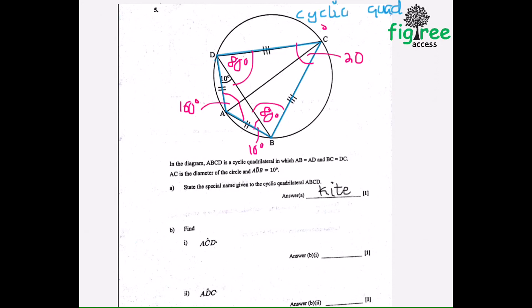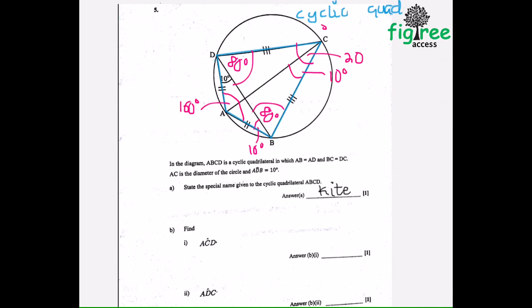For part B, find angle ACD. There are many ways. Since the diagonal AC cuts across the kite dividing it symmetrically, angle ACD equals angle ACB, so it will be 10 degrees. Or we can use the angle subtended by the same arc: the arc AD subtends 10 degrees at B, so it also subtends 10 degrees at C. Or: a chord meets the radius at 90 degrees, so 90 plus 80 is 170, from 180 is 10. So angle ACD is 10 degrees.